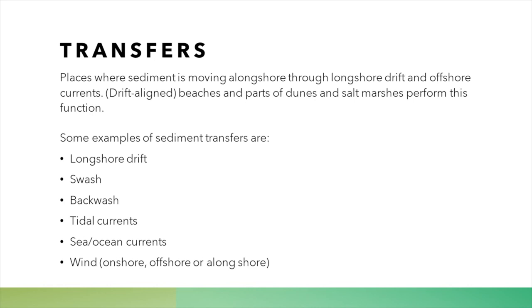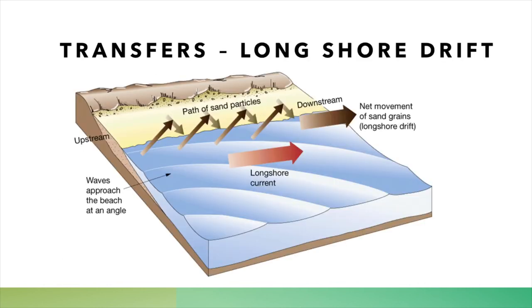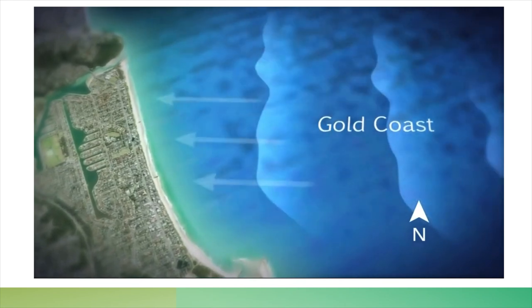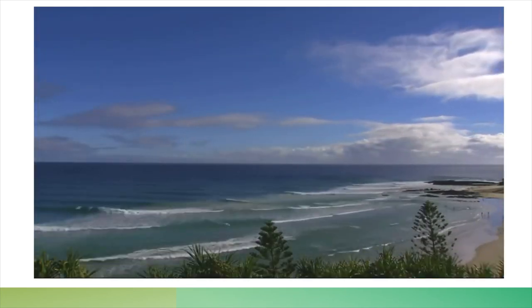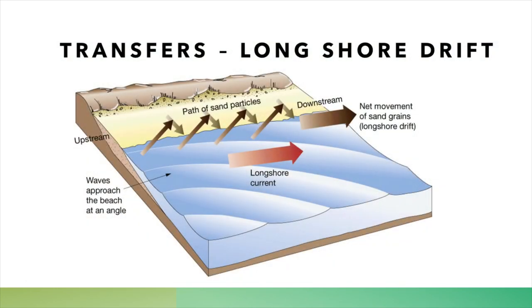The second part of the sediment cell is transfers — the movement of all of the sediment along the coastal area. This can happen for many different reasons, such as longshore drift, the swash and backwash of waves, tidal or ocean currents, or even wind along the beach. The most dominant way that sediment is transferred is through longshore drift, where the swash picks up the particle and carries it in the direction of the predominant wind, and the backwash brings it vertically down the beach. This process repeats, creating a net movement of sand grains along the coast.